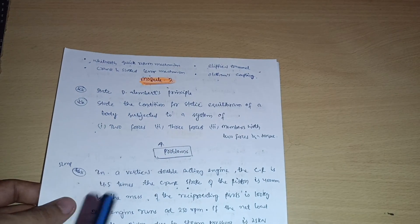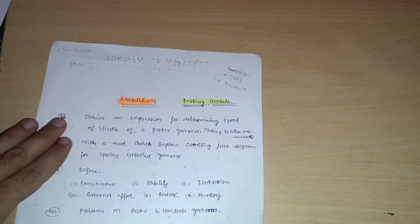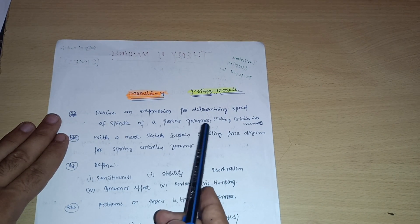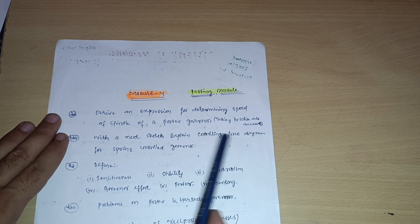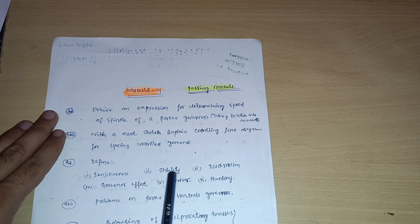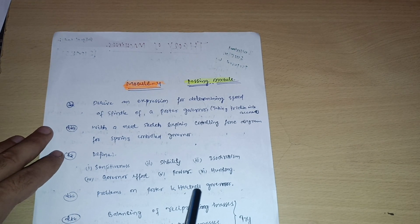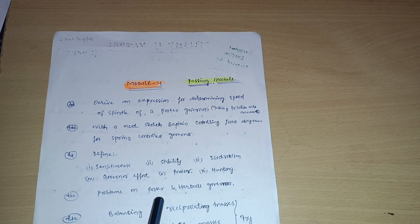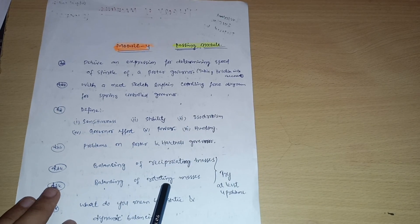Module 4 is also a passing module. Derive an expression for determining speed of the spindle of a Porter governor taking friction into account. With a neat sketch, explain the controlling force diagram for a spring-controlled governor. Also cover definitions like sensitiveness, stability, isochronism, governor effort, power, and hunting. Go through problems on the Porter and Hartnell governor. If you want to neglect this portion, you can, because there are 20-mark problems from reciprocating masses and balancing of rotating masses.